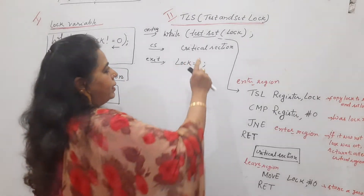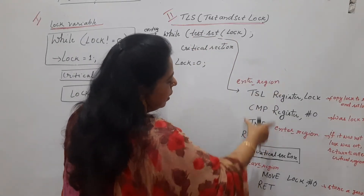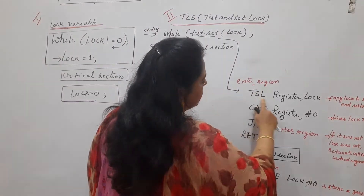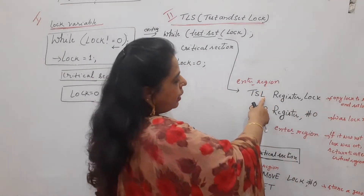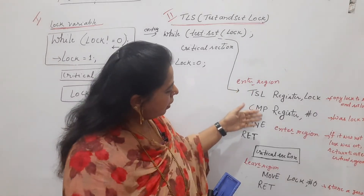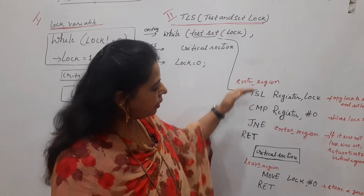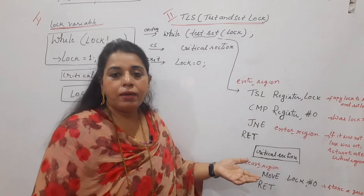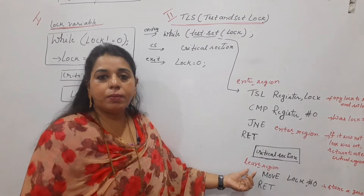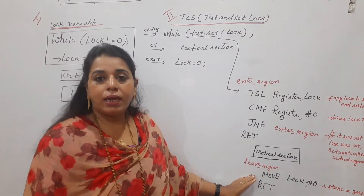In simple terms, this while loop — while test_set — the test_set function is written in assembly language. What you carry out is this particular instruction first: TSL register, lock. There are two subroutines: one is enter_region and another is leave_region. A process trying to enter the critical section will call the enter_region subroutine. At the time of leaving the critical section, it will call the leave_region subroutine. You should know what lines of code are in each subroutine.